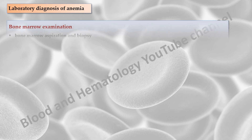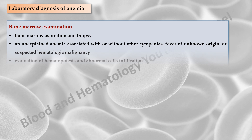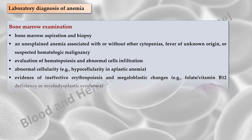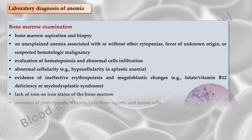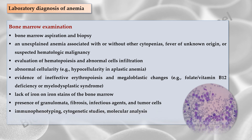A bone marrow examination is indicated for a patient with an unexplained anemia associated with or without other cytopenias, fever of unknown origin, or suspected hematologic malignancy. A bone marrow examination evaluates hematopoiesis and can determine if there is an infiltration of abnormal cells into the bone marrow. Important findings that can point to the underlying cause of the anemia include abnormal cellularity, evidence of ineffective erythropoiesis and megaloblastic changes, lack of iron, and the presence of granulomas, fibrosis, infectious agents, and tumor cells. Other tests including immunophenotyping by flow cytometry, cytogenetic studies and molecular analysis can also be performed on the bone marrow sample to detect specific genetic mutations and chromosome abnormalities in leukemia cells.